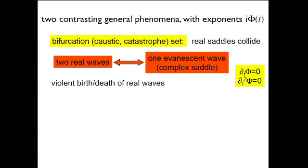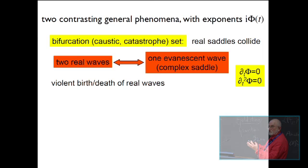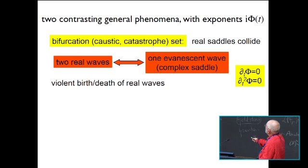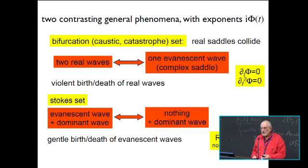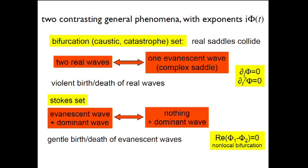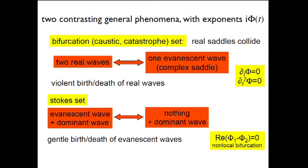Now these are contrasting phenomena. If the exponents you're dealing with are i times some phi, where phi's a phase, then the caustics, where the function, the object is very bright, optical fields, focus fields, is where real saddle points collide with each other. Now what does that mean? That's focusing. That's the envelope of families of rays. You get two real waves becoming one evanescent wave. That's a complex saddle. And what happens there is that the waves themselves are stationary points of the phase. But you have the additional condition that the secondary or the Hessian, if they're more than one variable, must vanish. That's a violent phenomenon. That's why these caustics are important. However, a gentle phenomenon, far away, very different, is on the Stokes set. And that's where an evanescent wave disappears in the presence of a dominant wave. And the condition there is a non-local bifurcation. Two distant saddles have the same real part of the phase.